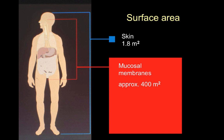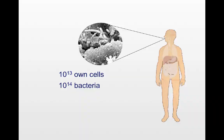The surfaces of our body that become colonized with bacteria are of two kinds: the skin and the mucosal membranes. The skin has a surface area of approximately 1.8 square meters, whereas the mucosal membranes that cover the respiratory tract, the gastrointestinal tract, and the urogenital tract have a combined surface of approximately 400 square meters, which is the equivalent of a tennis court. So it's an immense surface that we have on our mucosal surfaces.